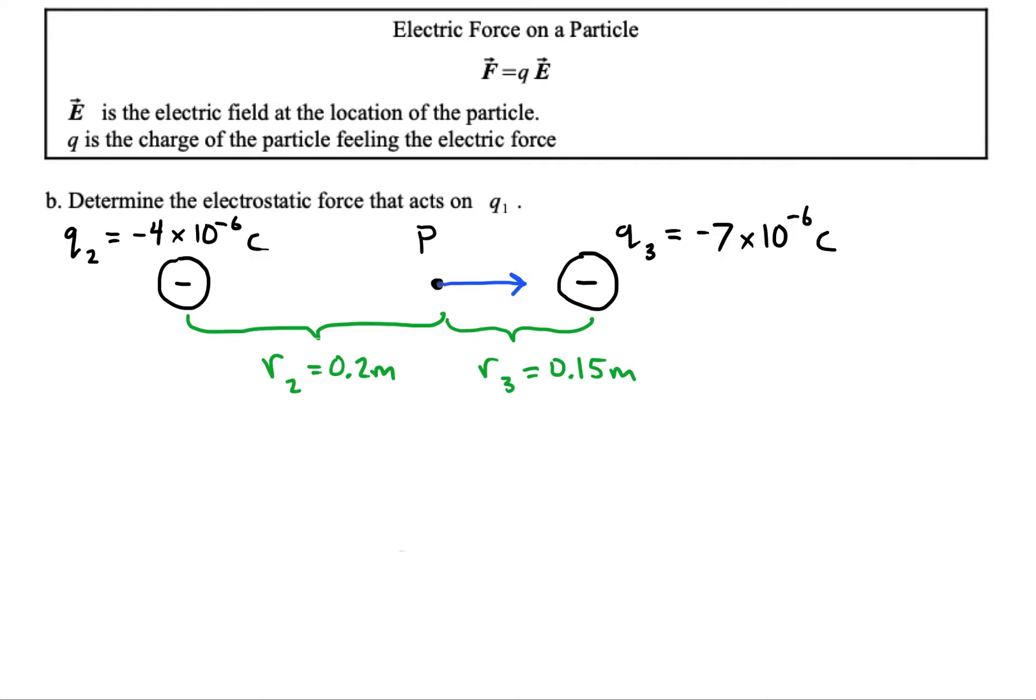Because the point is closest to this negative charge and negatives attract positives. So this was our E total and the magnitude of that E total was 1,900,000 newtons per coulomb pointed in the positive i-hat direction.